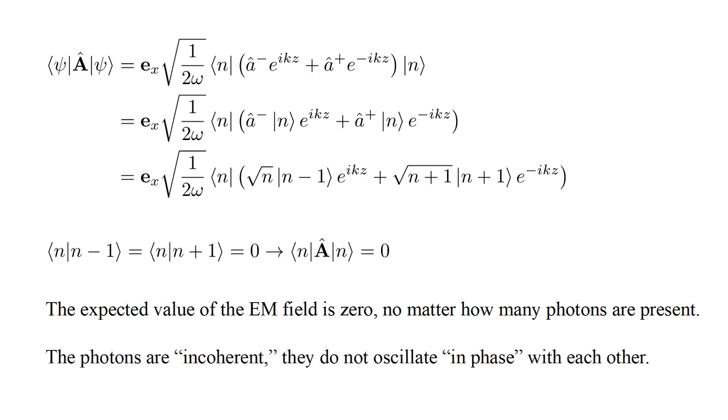This will be the case if the n photons are, quote, incoherent, that is, they do not oscillate in phase with each other. In fact, natural light typically behaves like this.